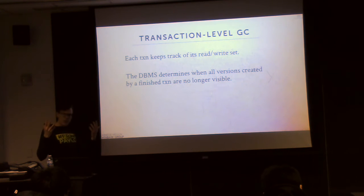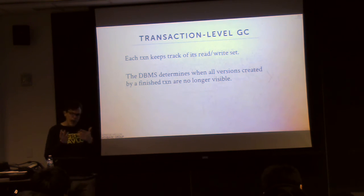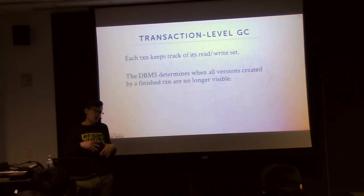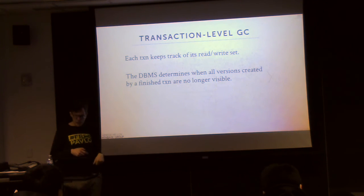For transaction-level GC, the idea is pretty obvious — you maintain the read/write set for each transaction, so when it commits you know exactly what versions it touched and what you can clear out.